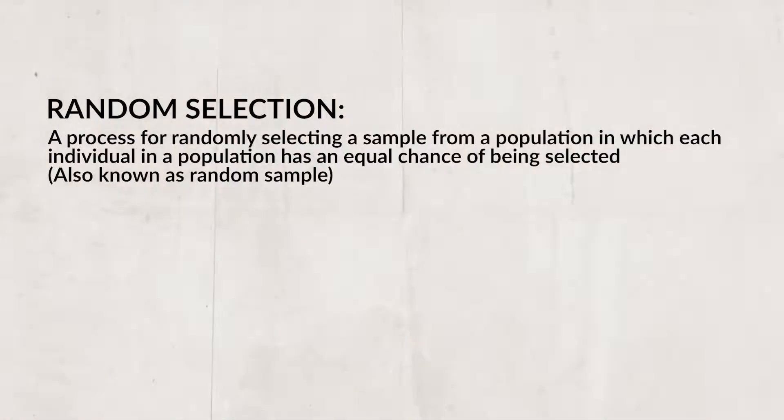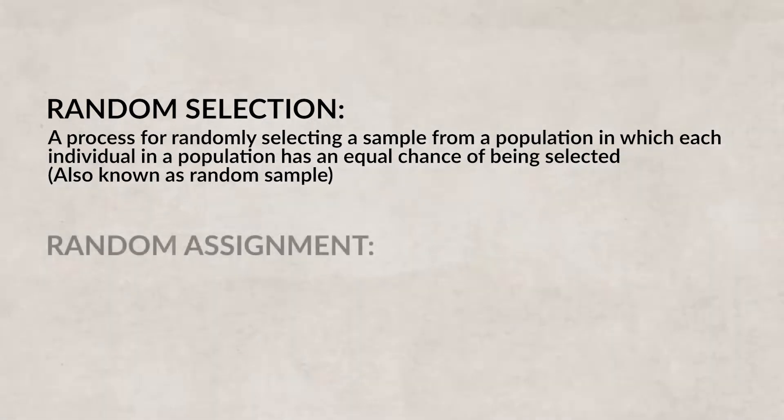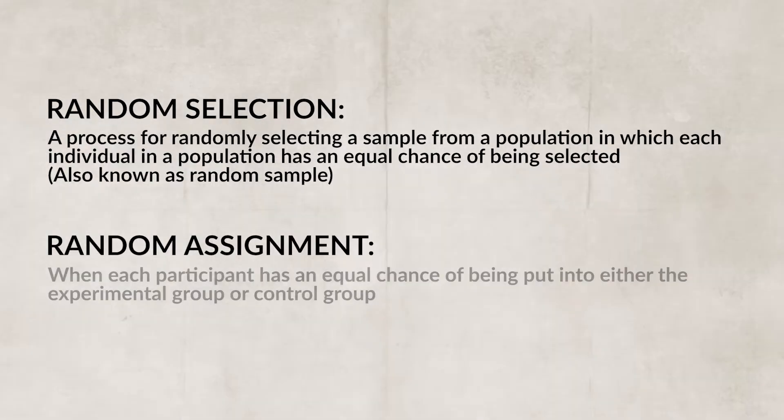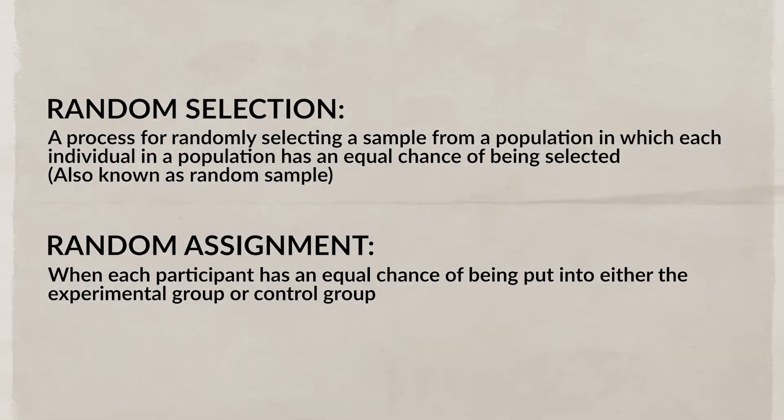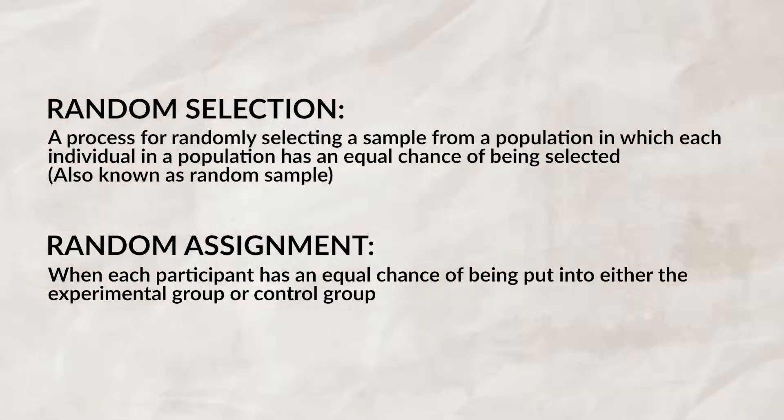Researchers should also randomly assign participants into either the control group or the experimental group to ensure a quality experiment with accurate results. This is known as random assignment, and it's different from random selection — a concept from our last video. Random selection is when participants are randomly selected to be part of a study, while random assignment is when participants are randomly assigned to the control or experimental group.